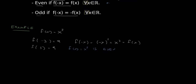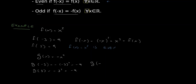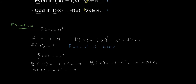Now with another example: if we take g of x equals minus x squared, and we evaluate it at minus 3, it's minus of minus 3 squared, which is minus 9. And g of 3 is minus 3 squared, which is again minus 9. So let's evaluate g at minus x: g of minus x equals minus of minus x squared, which is minus x squared, and this is g of x. So g of x equals minus x squared is also even.